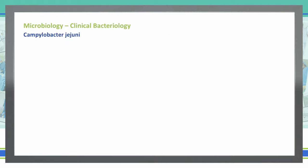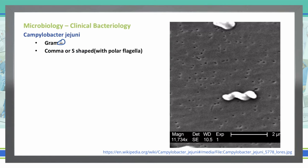Let's continue on and discuss Campylobacter jejuni. Campylobacter jejuni is a gram-negative organism, and it's actually got a comma or S shape to it with polar flagella. You can see in this scanning electron microscopic view that kind of curlicue look to the Campylobacter jejuni. There are polar flagella associated with it, coming off of the ends.